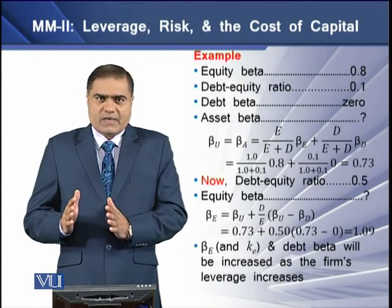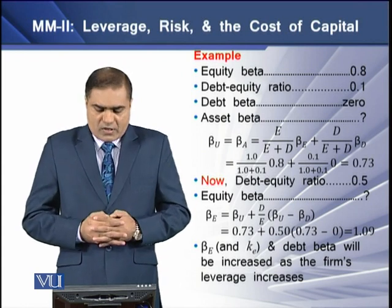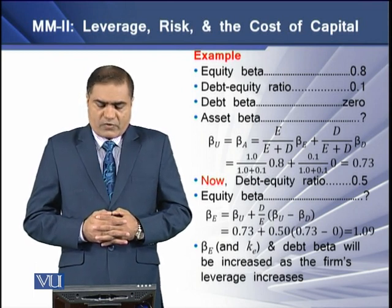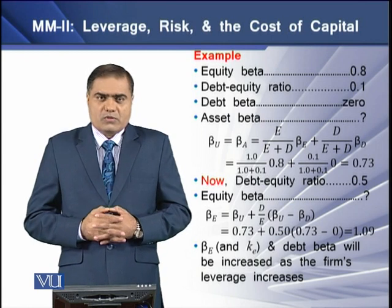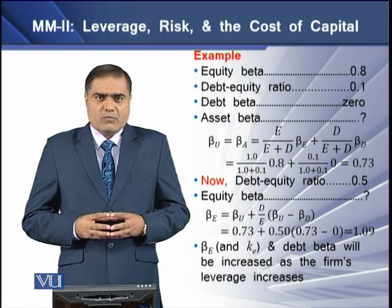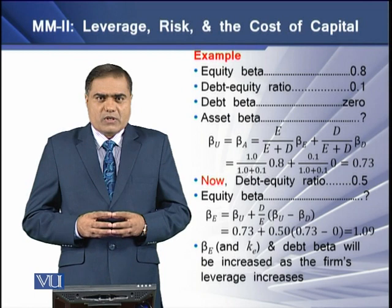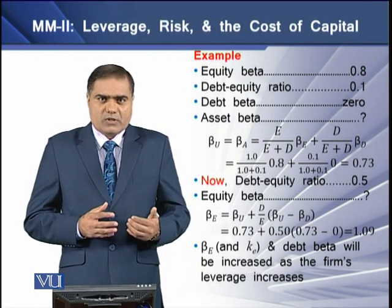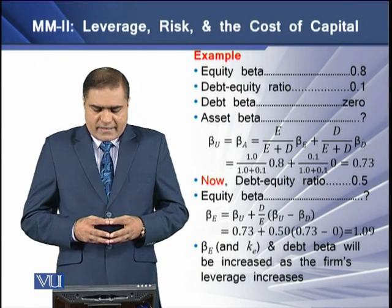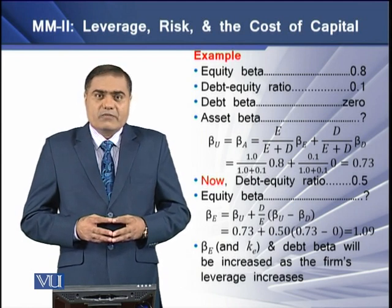We have an example to understand unlevered and levered betas. We have an equity beta of 0.8, a debt-equity ratio of 0.1, and a debt beta equal to 0. Using the model where unlevered beta equals the proportional equity beta plus the proportional debt beta, the asset or unlevered beta is equal to 0.73.